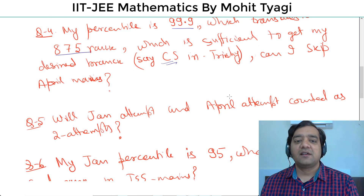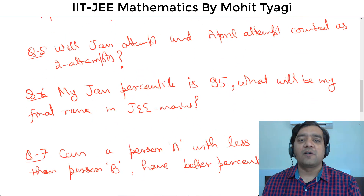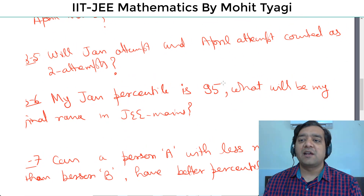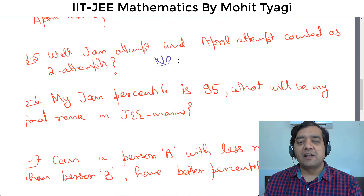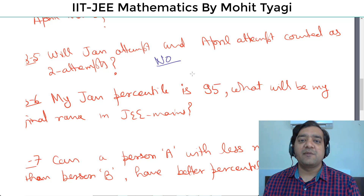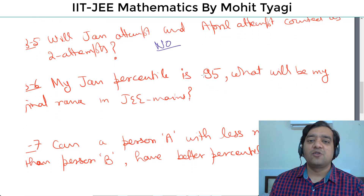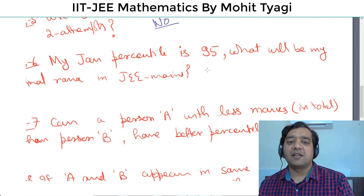Will January attempt and April attempt be counted as two attempts? No — one attempt। एक साल में एक ही attempt होगा, चाहे दोनों बार दिया हो या एक बार।